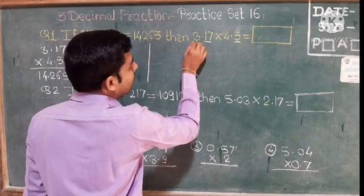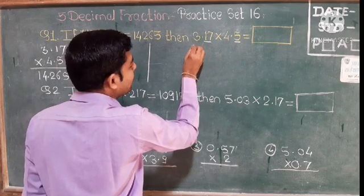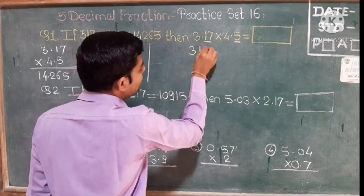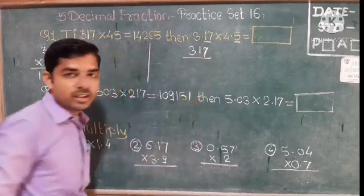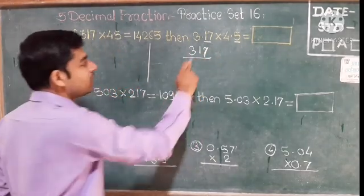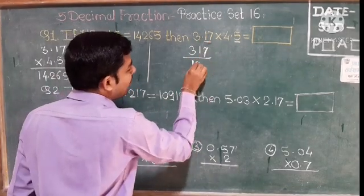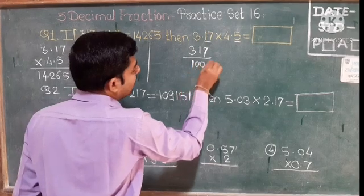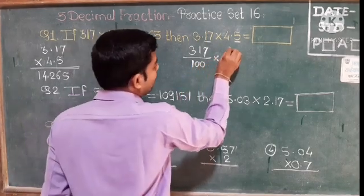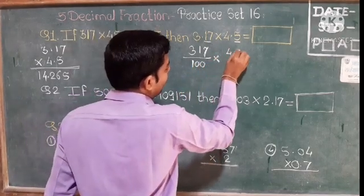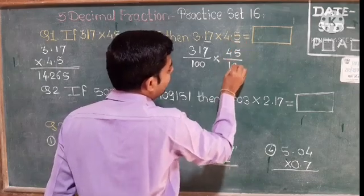In the decimal point method: if the point is 2 digits, what is the denominator? 100. So we multiply: 317 upon 100, multiplied by 45 upon 10. The denominator is 10.